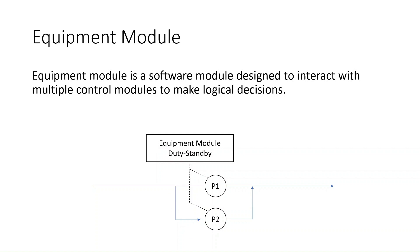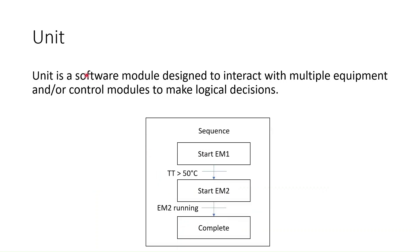Let's move on to the next software module: the unit. A unit is a software module designed to interact with multiple equipment and/or control modules to make logical decisions. Here is the example of a sequence. A sequence can run multiple equipment modules, starting them in a logical order depending on your process and stopping them in a logical order. Because it interacts with multiple equipment modules at the same time, a sequence is categorized as a unit.